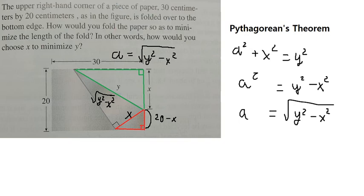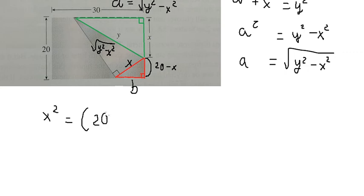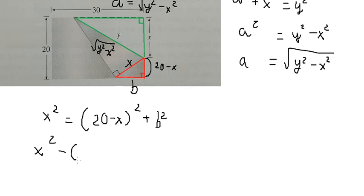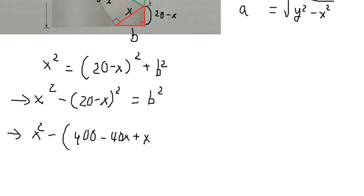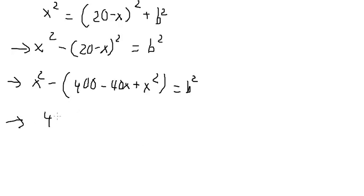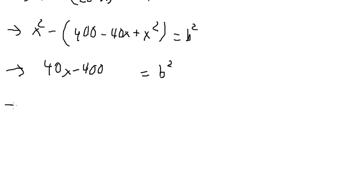We need to find the value of b. Using the Pythagorean theorem: s² equals (20 minus s)² plus b². We simplify: s² minus s² gives us 40s minus 400 equals b². Taking the square root of both sides, we have the square root of (40s minus 400) equals b.